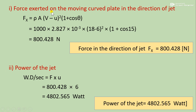First, calculate force exerted on the moving curved plate in the direction of the jet, Fx, using the formula: Fx = rho A (v minus u)² (1 + cos theta). Substituting rho = 1000, area as calculated, v = 18, u = 6, and theta = 15°: Fx comes out to 800.428 Newtons. Second, calculate power (work done per second) as the product of force and plate velocity: power equals 800.428 times 6, giving power of the jet as 4802.565 Watts.